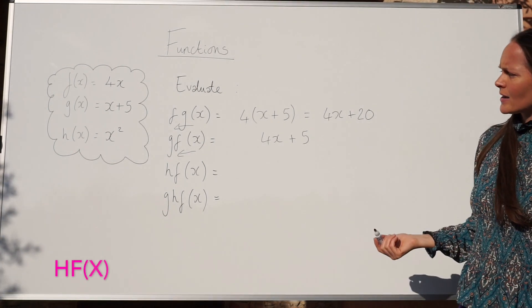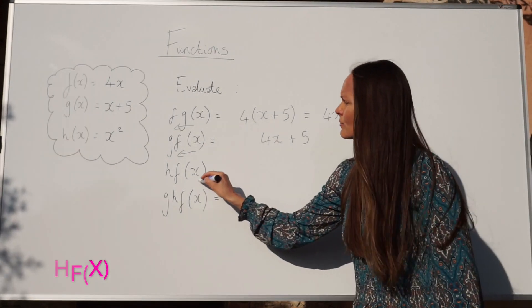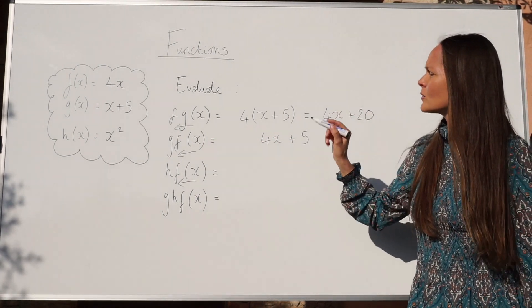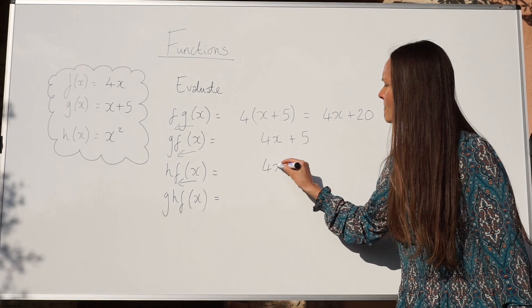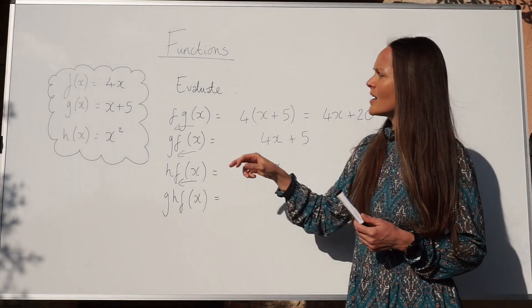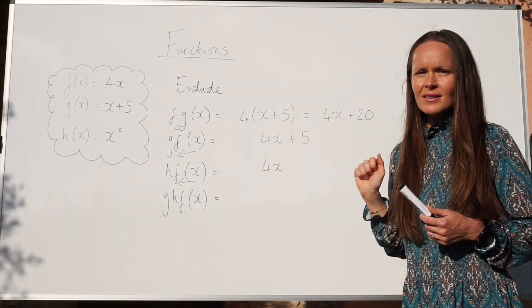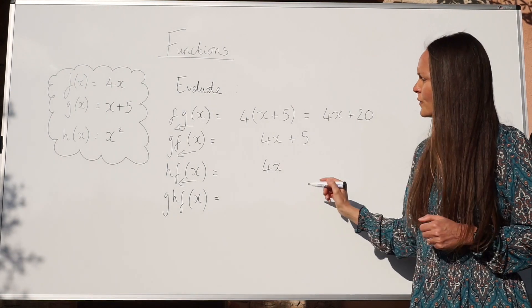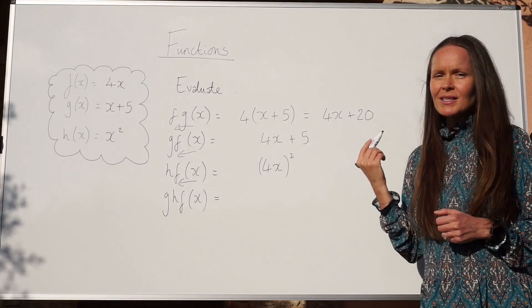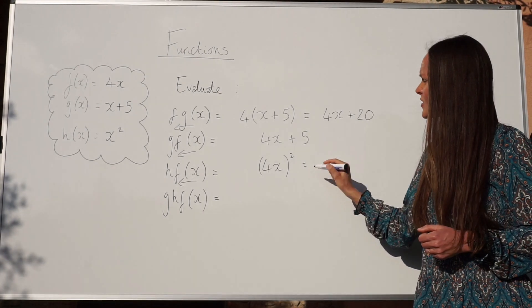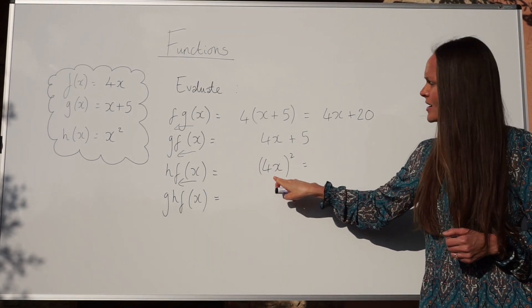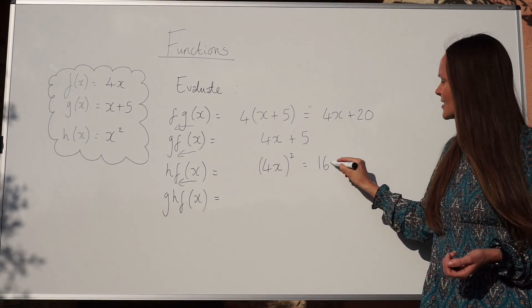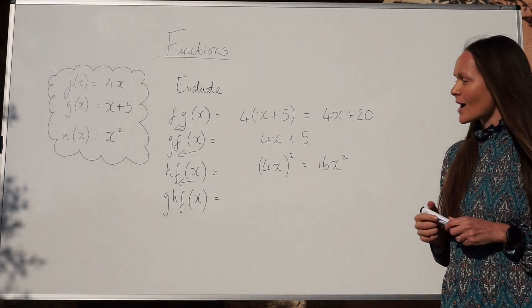Next, we've got h f of x. Again, you write down the function f of x first — remember, working back to front — so f of x is 4x. Looking at the function h of x, x is being squared. So you square all of 4x by putting it in brackets: 4x all squared. Because we're squaring all of it, 4 squared is 16 and x squared is x squared, giving 16x squared.